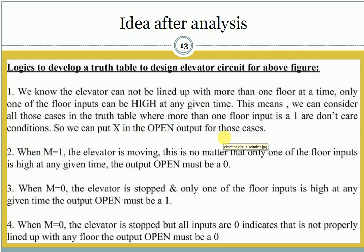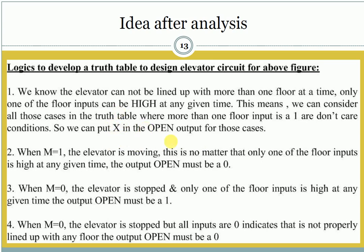Suppose the values of F1, F2, and F3 are all 1 at the same time. For that case, we should put don't care in the open output, because having F1, F2, and F3 all equal to 1 simultaneously would indicate that the elevator is on the first floor, second floor, and third floor at the same time, which is not possible in reality. That's why it will be a don't care condition for the open output.